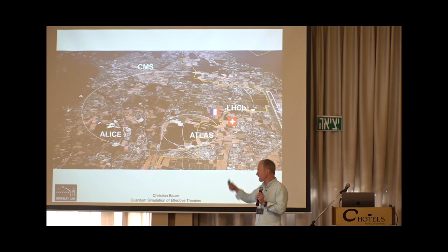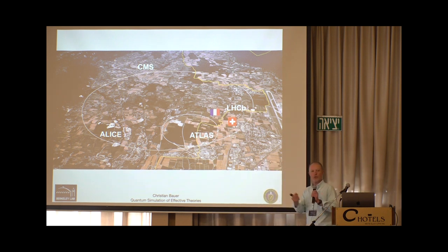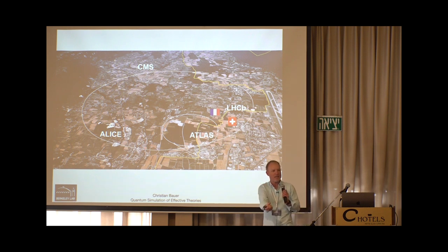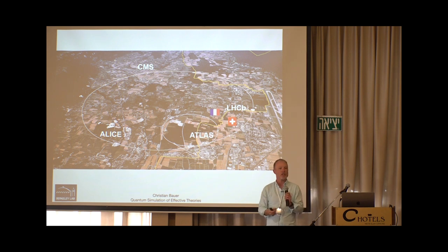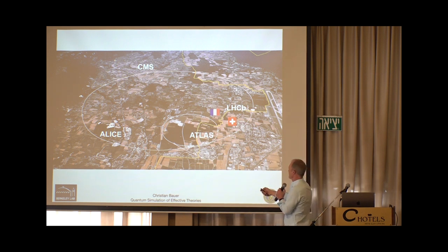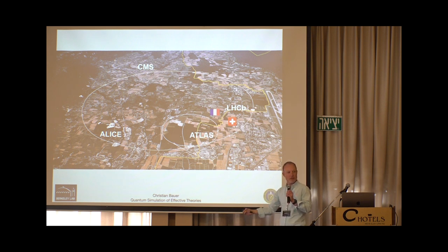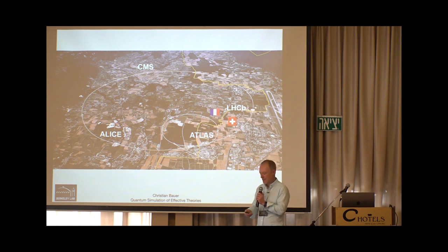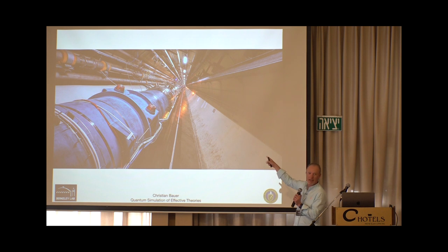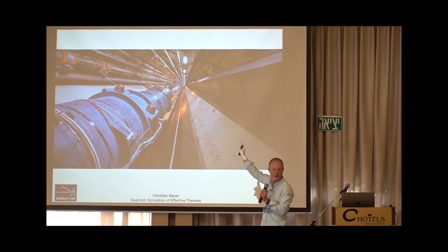To test the standard model we do experiments at shorter and shorter distances. To see small constituents we have to probe at very small distance scales, meaning very short wavelengths and very high energies, which is why we build ever bigger particle colliders. Here is the current collider in operation in Switzerland — a circular tunnel where we circulate protons and collide them at four different points to see what comes out. The Geneva Airport runway gives you a sense of scale.